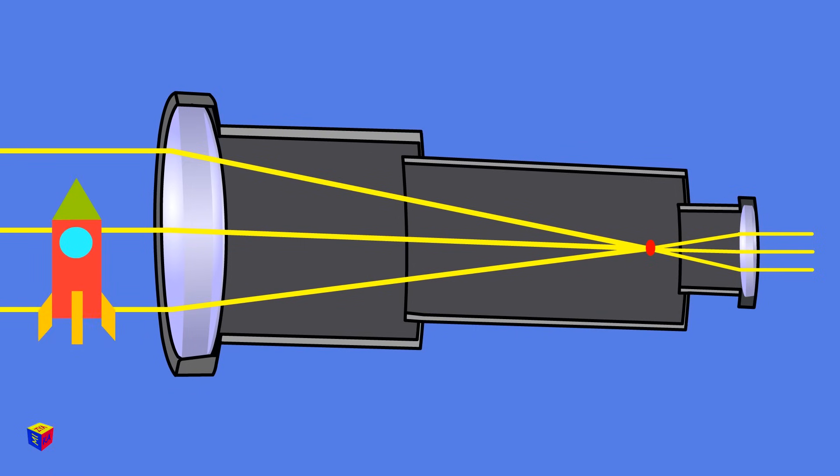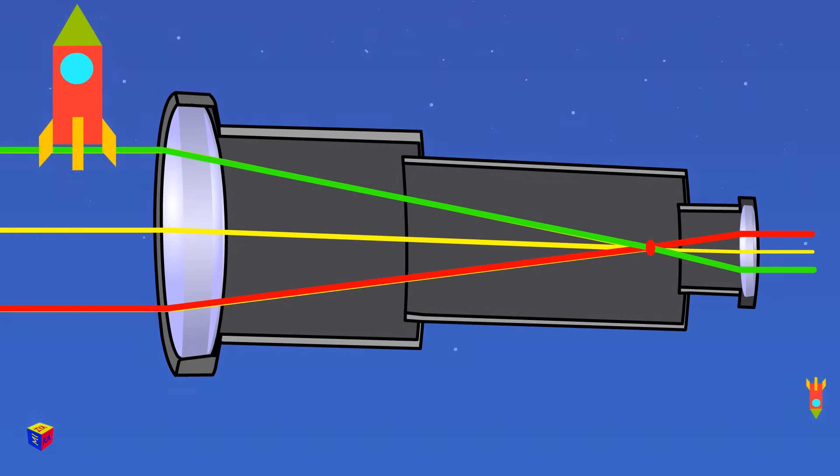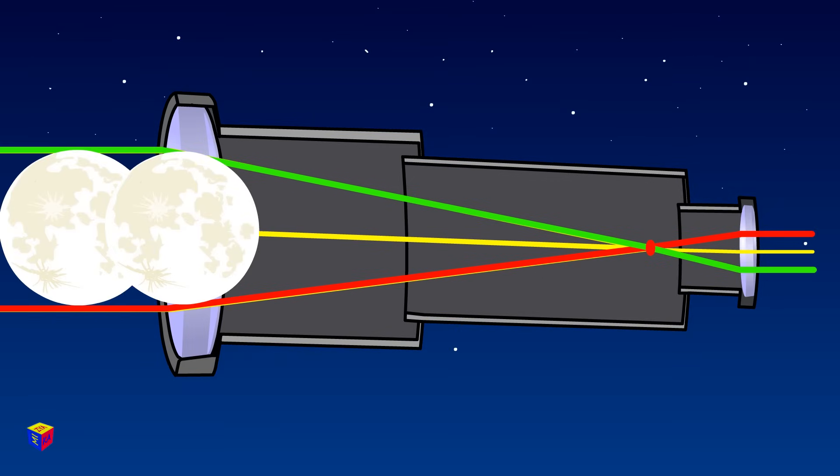As a result, we see an enlarged but inverted image of an astronomical object. But in space, there is neither top nor bottom, so the flip of the image does not interfere with observations.